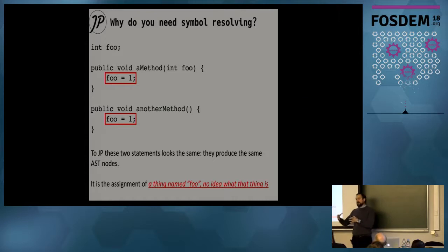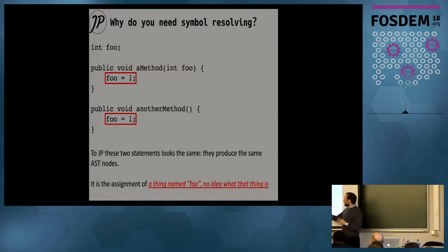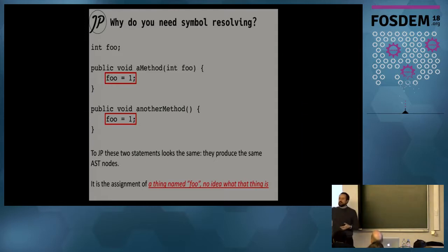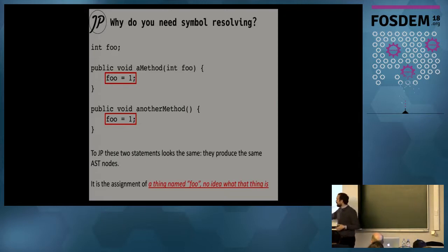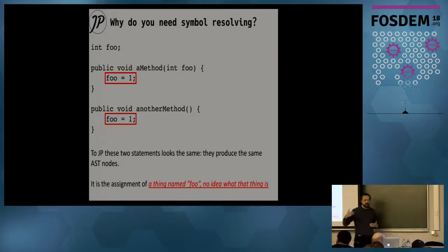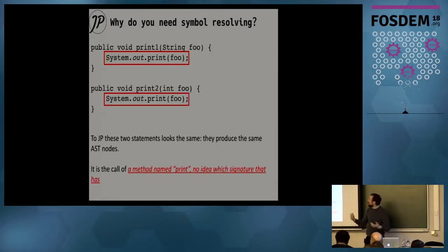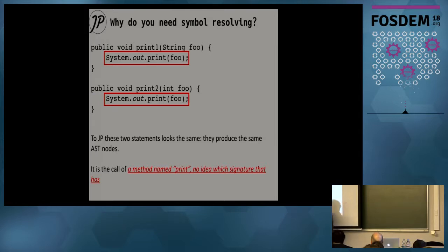A parser is not enough to solve complex problems, which is why we also have a symbol solver. If you look at two statements that assign the value one to something called foo, the abstract syntax tree looks exactly the same — the AST doesn't know what foo is. It has no idea that in one case foo is a parameter and in the other it's a field. Similarly, two method calls to methods that happen to have the same name but are different look identical in the AST, so you need additional logic — symbol resolution — to distinguish these cases.